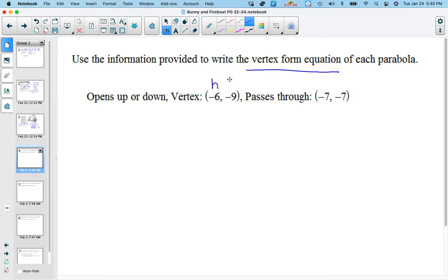So the vertex, remember, is hk. And it passes through a point, they give you a point. So I'm going to use this for x and this for y. So again, we have y equals A, x minus h quantity squared plus k. So I can fill those in, a negative 7 for y equals A, that's what we're trying to solve, negative 7 minus a negative 6 quantity squared, then plus a negative 9. So I'm going to change this to positive. So negative 7 plus 6 is negative 1, square that, you get a 1. 1 times A is A. And then if you add 9, we get A equals a positive 2.